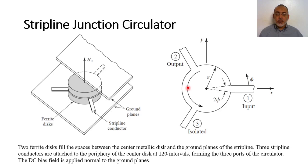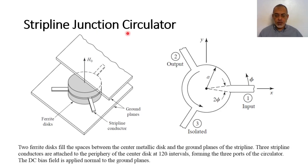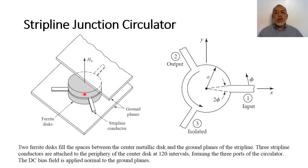Starting from this video, we have three more videos to complete the analysis of what we are calling the strip line junction circulator — please be patient and continue through all four videos. To understand our plan: we are going to present the circulator as a circular resonator. If the ferrite medium is unbiased, it would simply be a dielectric resonator. At the beginning we are going to discuss the dominant mode of such a dielectric resonator.